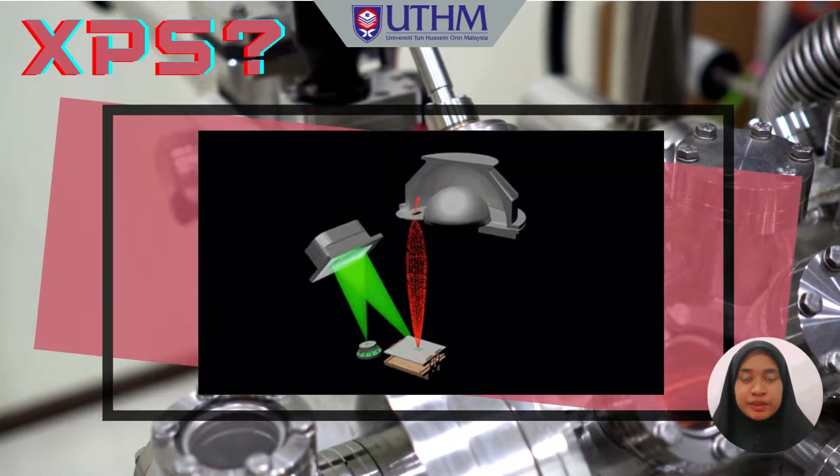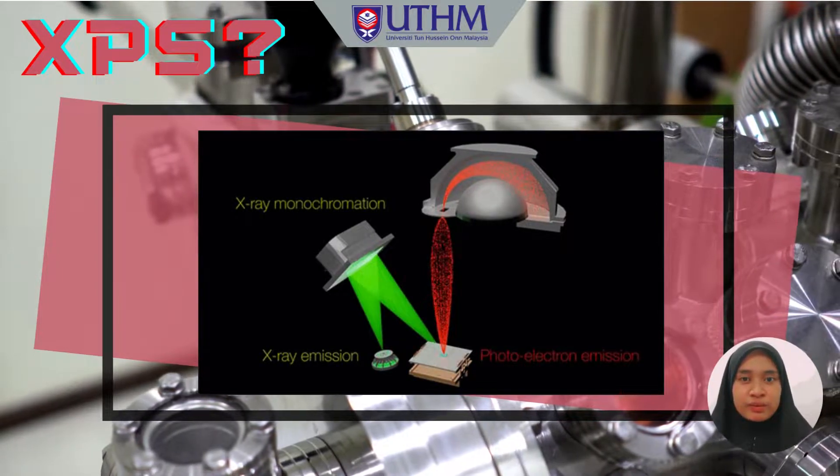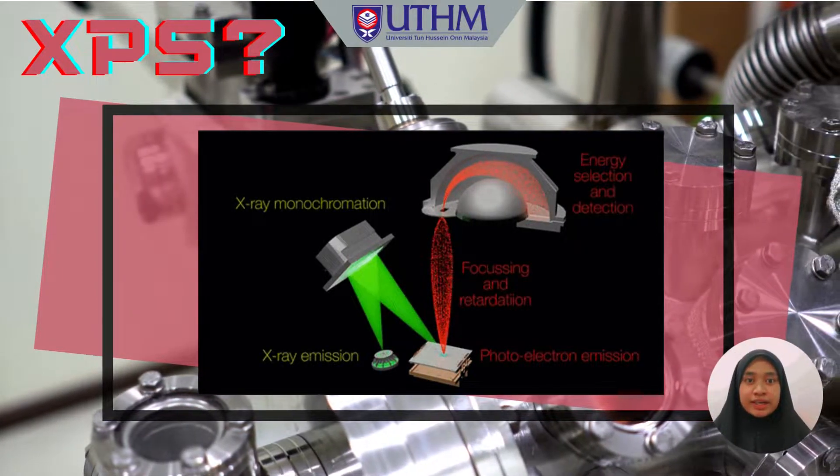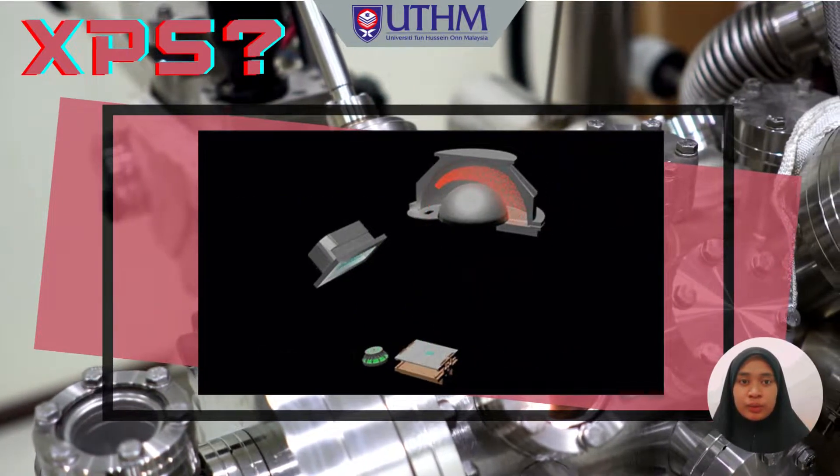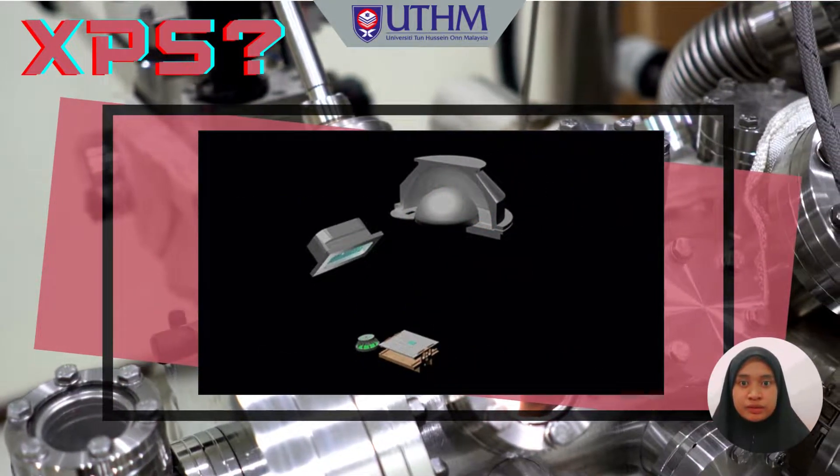XPS spectra are obtained by irradiating a solid surface with a beam of X-rays and measuring the kinetic energy of electrons that are emitted from the top 1 to 10 nanometers of the material.